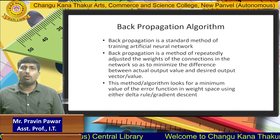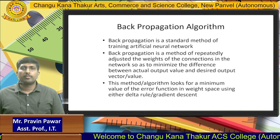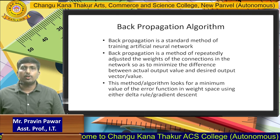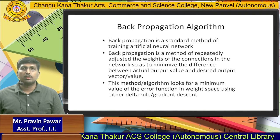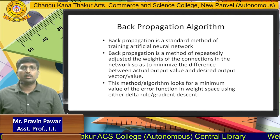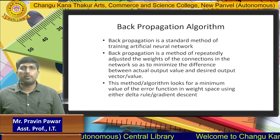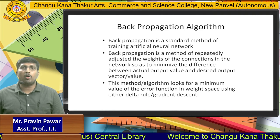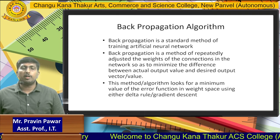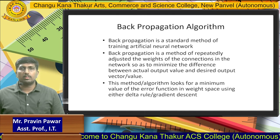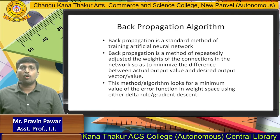This algorithm looks for the minimum value of the error function in weight space using either the delta rule or gradient descent algorithms. Backpropagation specifically reduces the amount of errors from whatever outputs are being generated, and is used to reduce the error of the output functions.